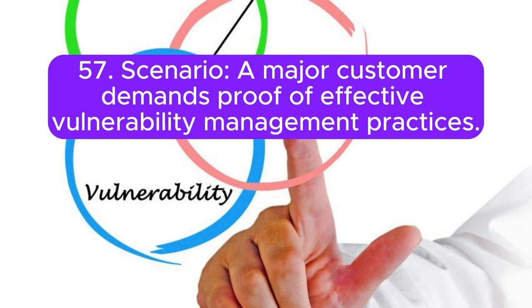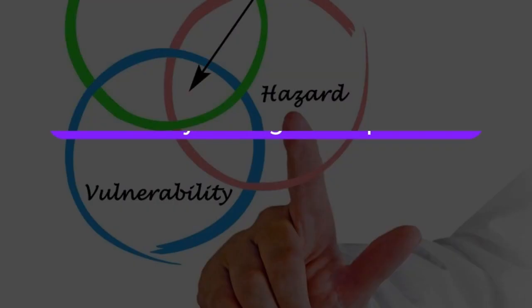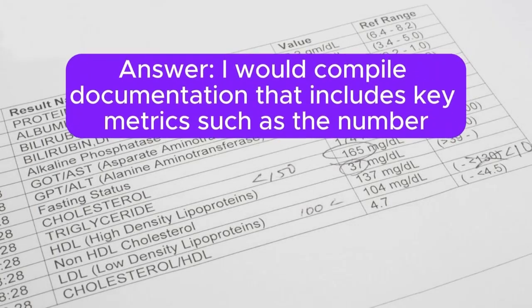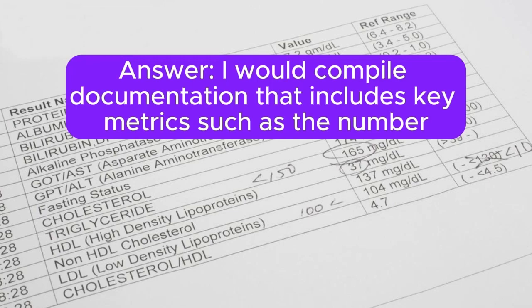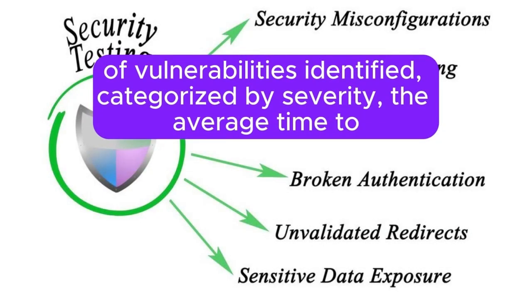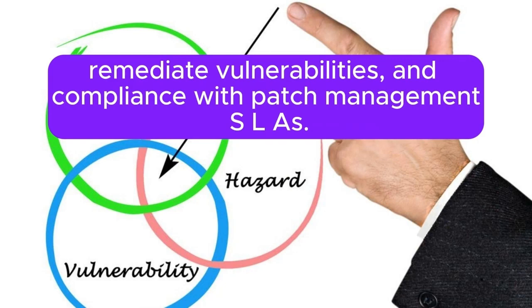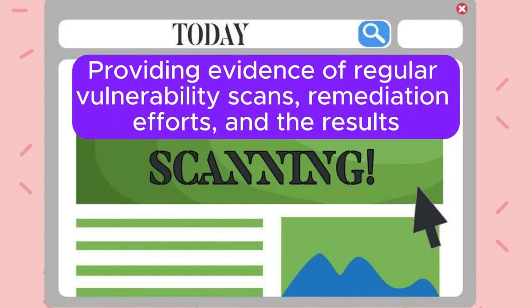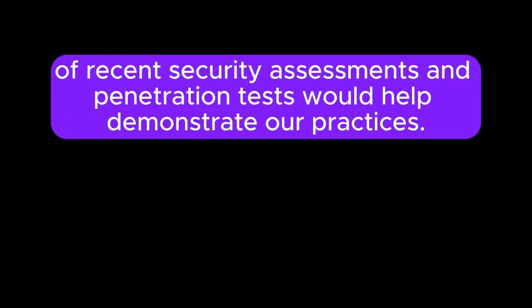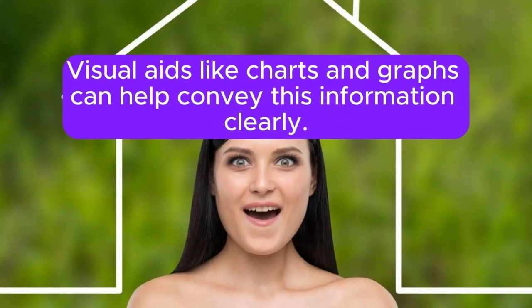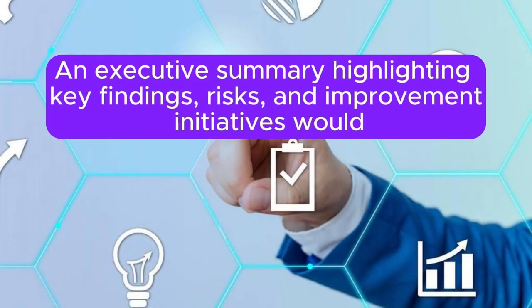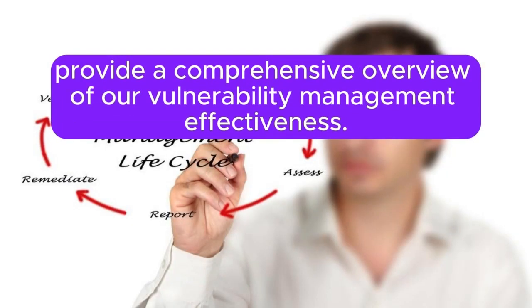Scenario 57: A major customer demands proof of effective vulnerability management practices. How do you provide this assurance? I would compile documentation that includes key metrics such as the number of vulnerabilities identified categorized by severity, the average time to remediate vulnerabilities, and compliance with patch management SLAs. Providing evidence of regular vulnerability scans, remediation efforts, and the results of recent security assessments and penetration tests would help demonstrate our practices. Visual aids like charts and graphs can help convey this information clearly. An executive summary highlighting key findings, risks, and improvement initiatives would provide a comprehensive overview of our vulnerability management effectiveness. Communication with the customer to address their concerns and answer any questions is essential.